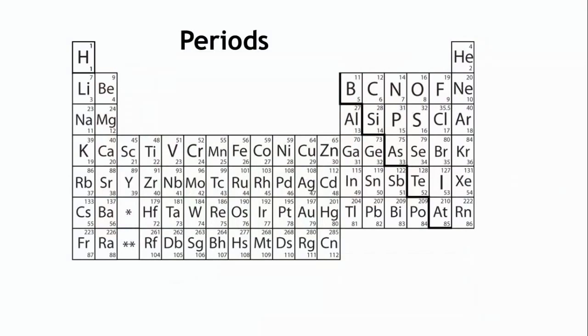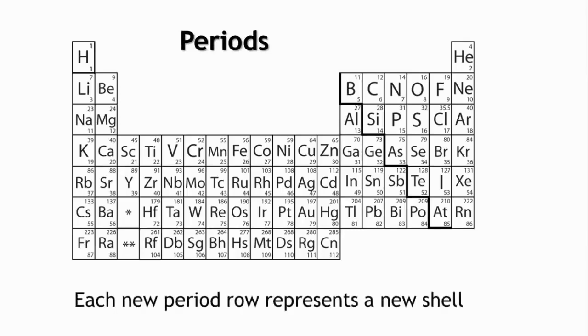The rows going across, from left to right, are periods. Elements in the same period all share something in common. They have the same number of energy shells. Each new period row represents a new shell.